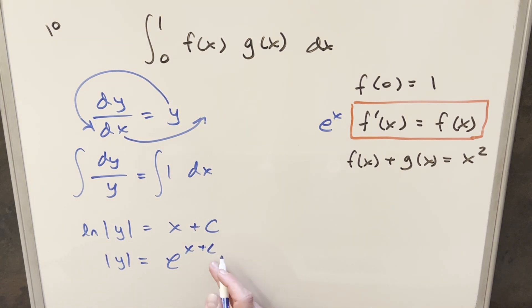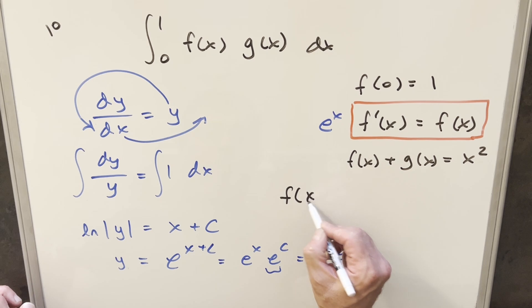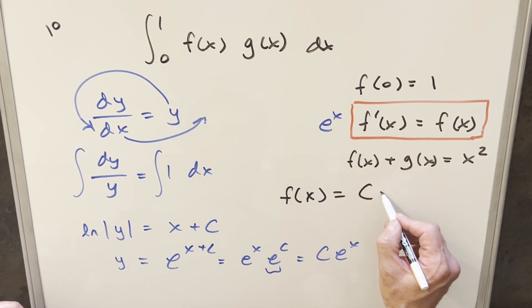But then with exponent properties, we could break this up like e to the x times e to the c. But this right here is just a constant. So I can write this as ce^x. But I can actually drop the absolute value here because we have a c over here that's going to determine the sign anyway. So we'll drop that. And again, what we said earlier is that y is going to be f of x. So what we've come up with here is we're saying f(x) is going to be equal to ce^x.